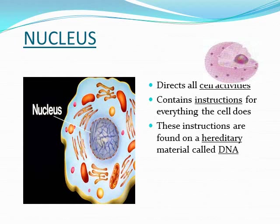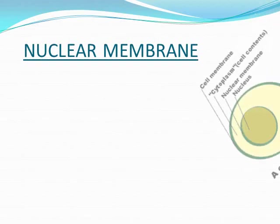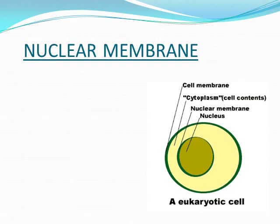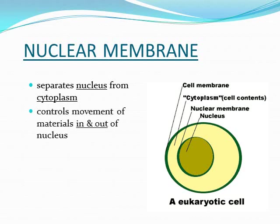The nucleus gives instructions — just like our brain — to all activities being conducted in the cell. These instructions are found on a hereditary material called DNA. The nuclear membrane, as the name suggests, is the membrane that covers the nucleus. It is present in eukaryotic cells; prokaryotic cells do not have a nuclear membrane. Its basic function is to separate the nucleus from the cytoplasm and, like the cell membrane, control the movement of materials in and out of the nucleus.